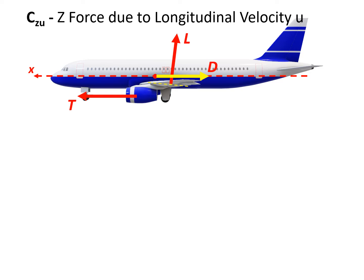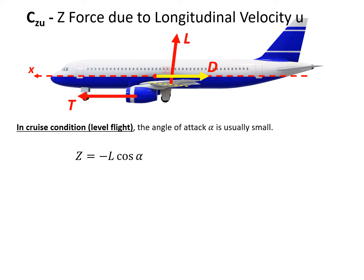We first study Czu, the z-force change due to longitudinal velocity. Looking at the aircraft side view, there are two forces roughly acting on the aircraft: thrust, lift, and drag. In cruise condition or level flight, the angle of attack alpha is usually very small. The z-force only has one component, which is caused by the lift, and it can be calculated as minus L times cosine alpha.